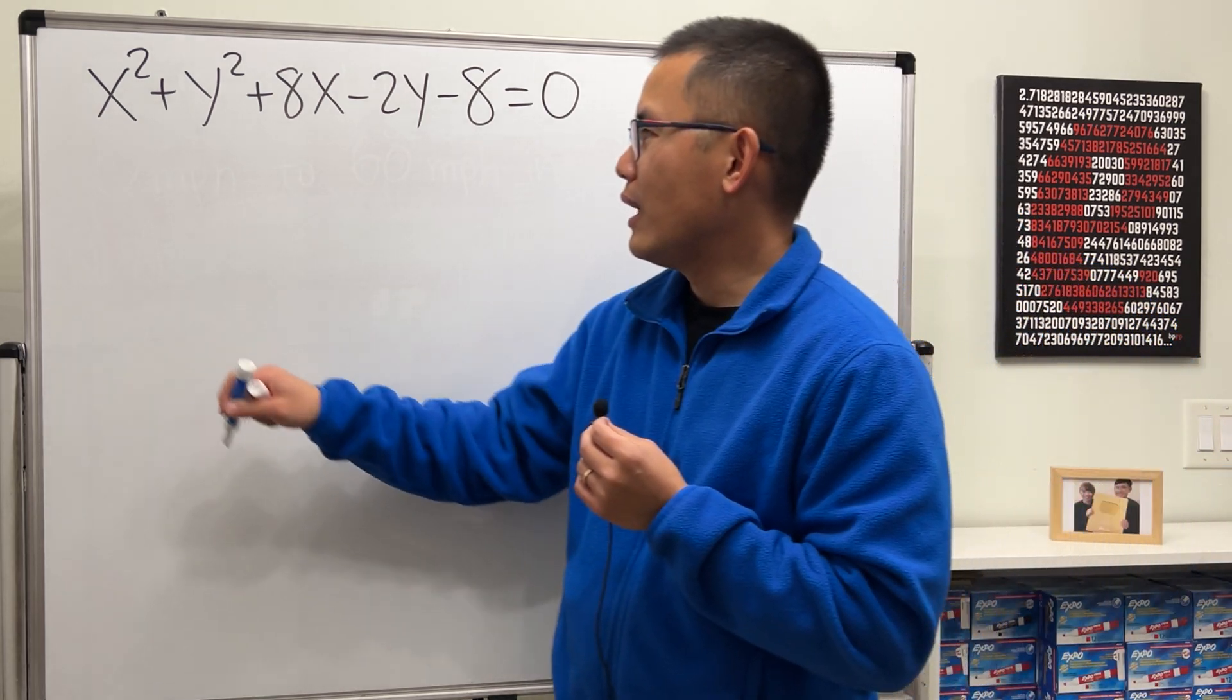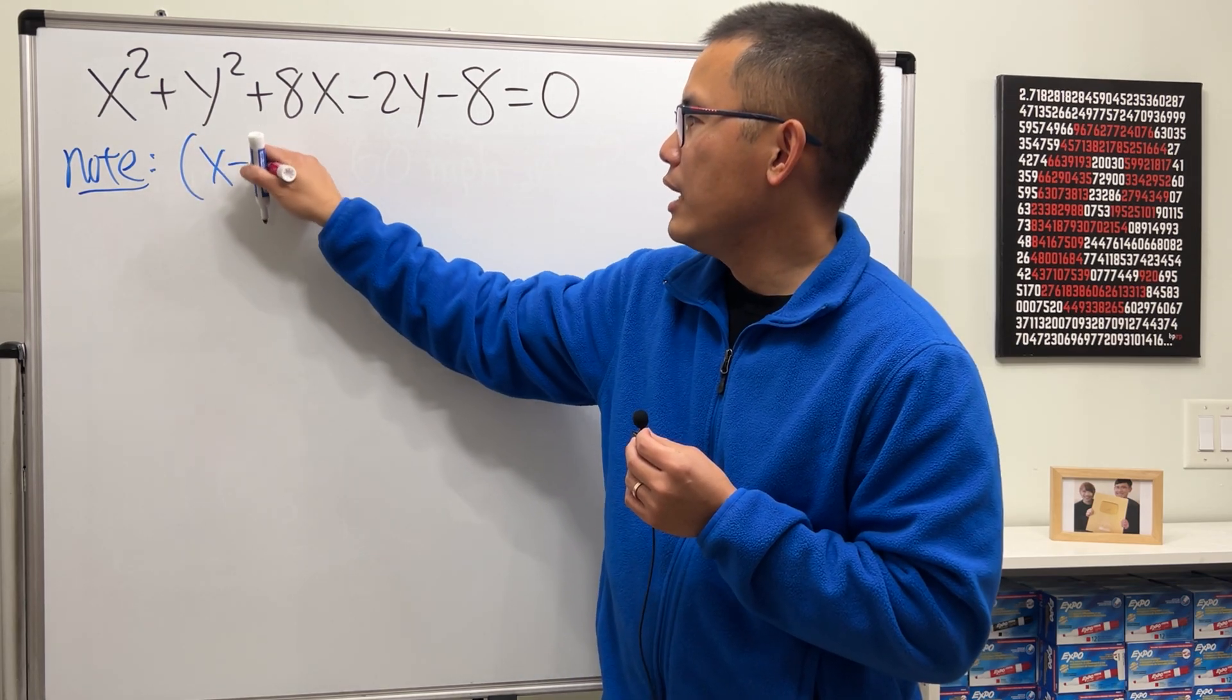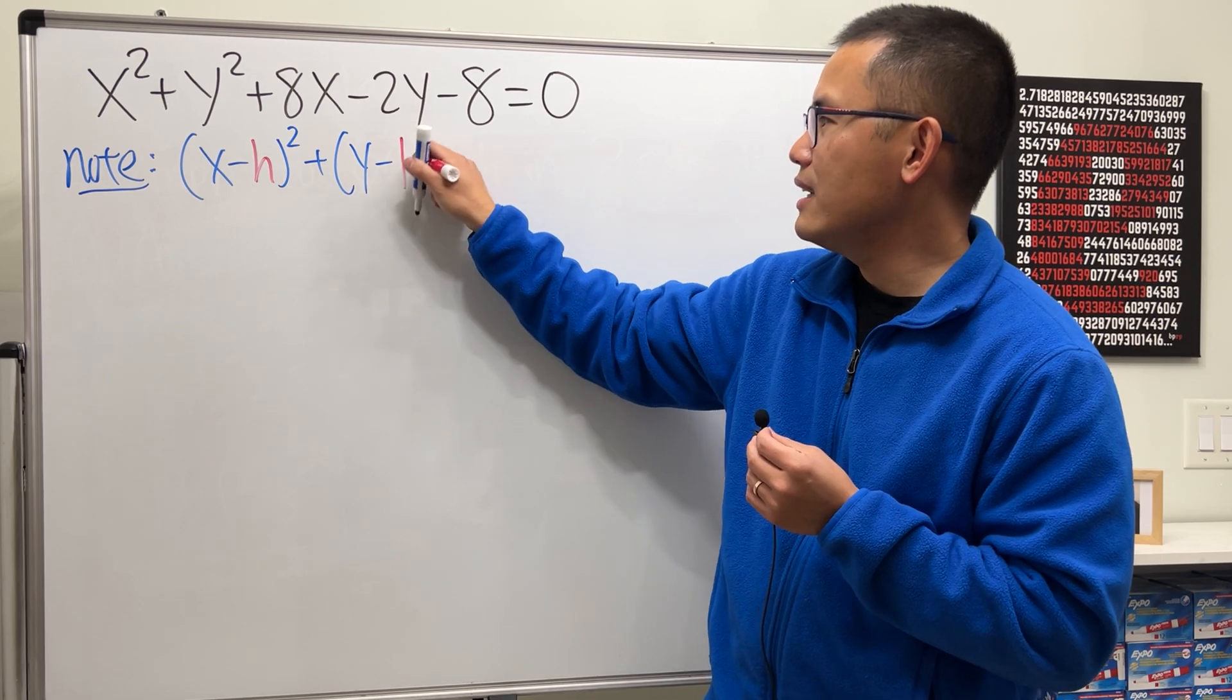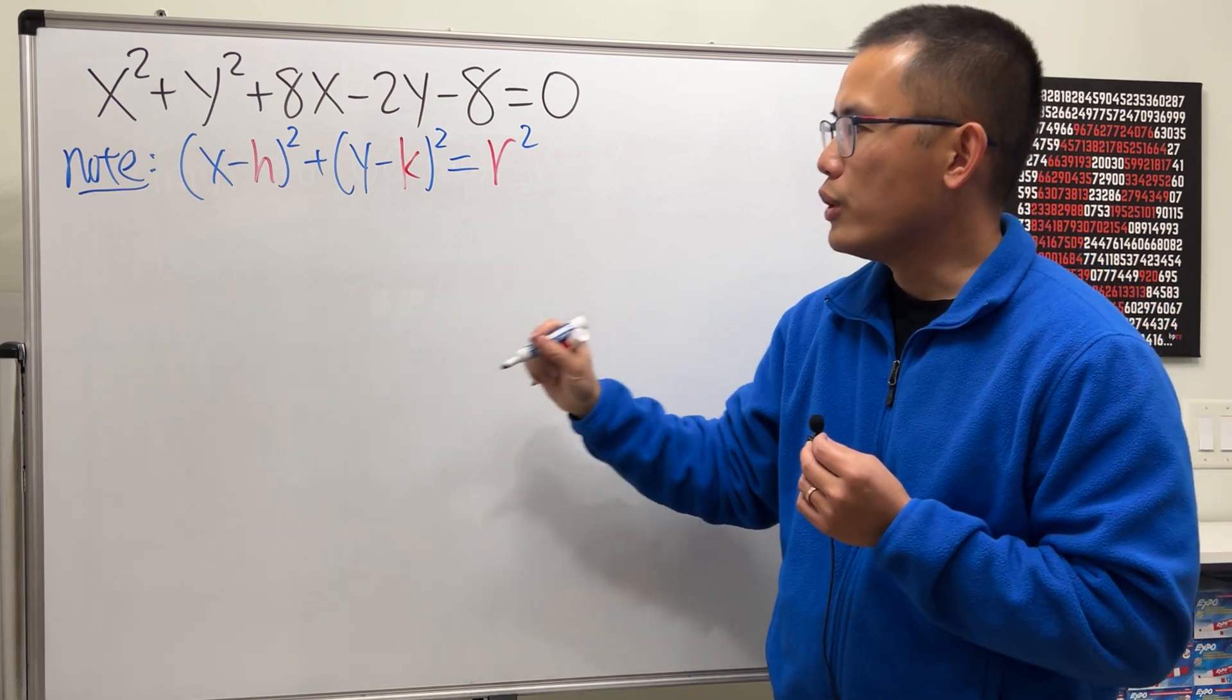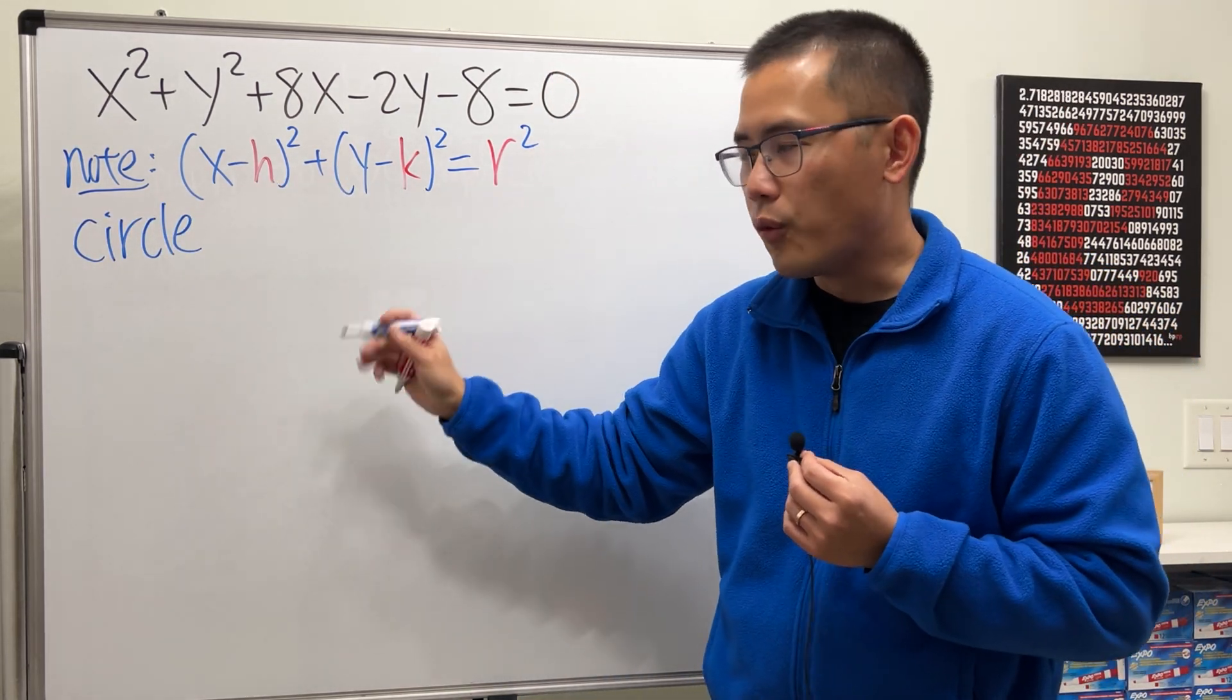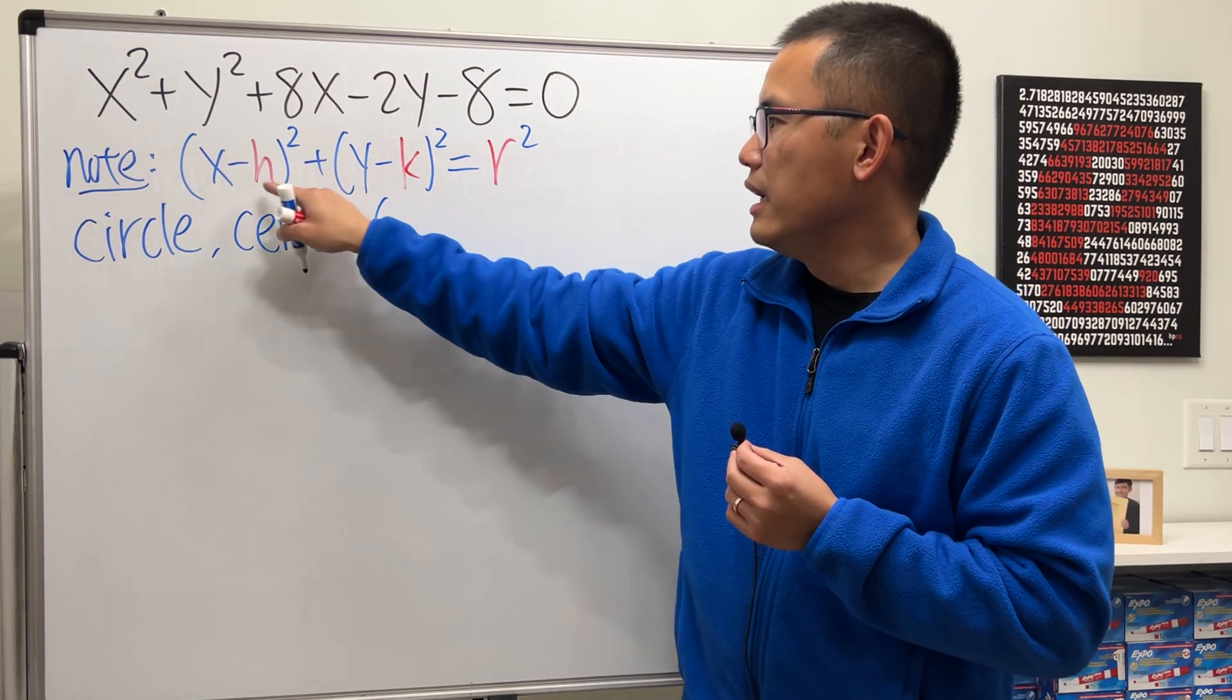First, I will tell you, note that when we have the equation (x-h)² + (y-k)² = r², this is the equation of a circle in the standard form, and you will know that the center is at (h, k).